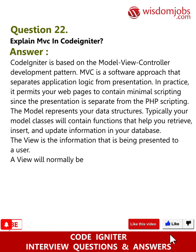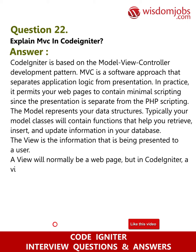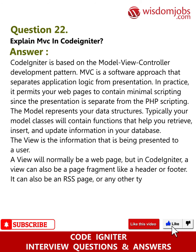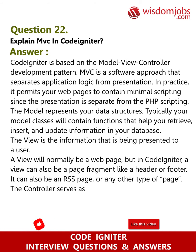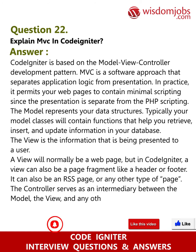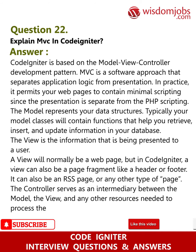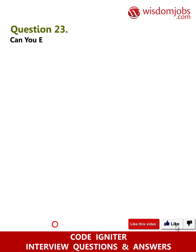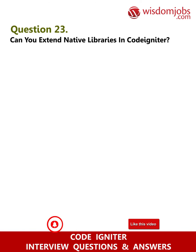Continuing MVC in CodeIgniter: The view is the information being presented to the user — it will normally be a web page, but in CodeIgniter a view can also be a page fragment like a header or footer, an RSS page, or any other type of page. The controller serves as an intermediary between the model and view, and any other resources needed to process the HTTP request and generate a web page.